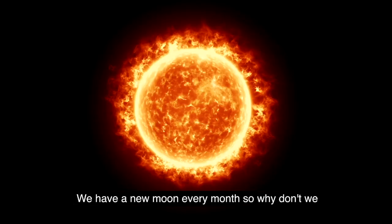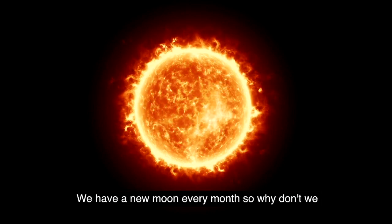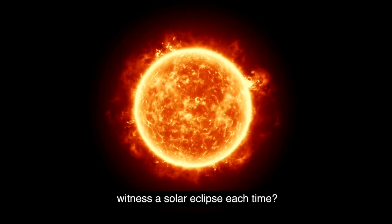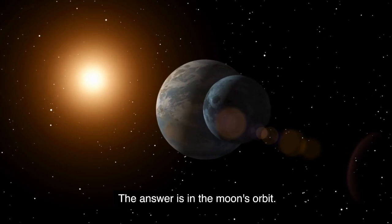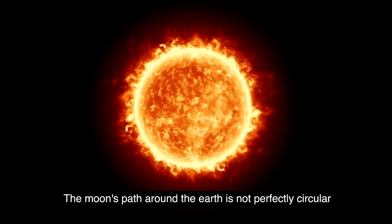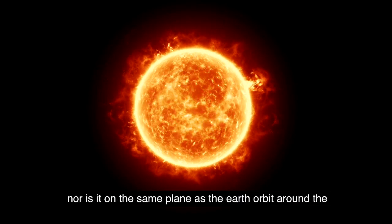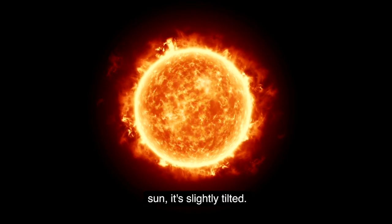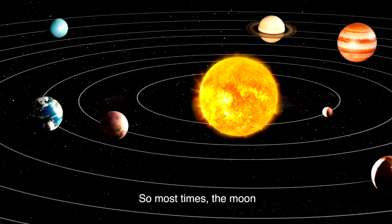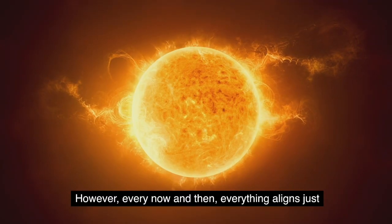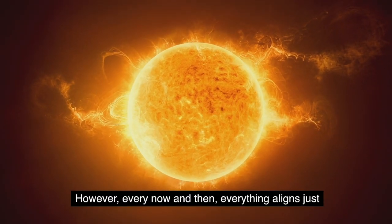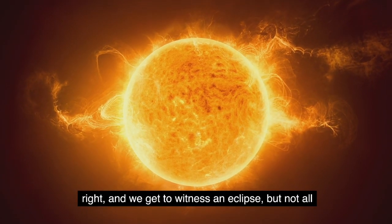But here's the intriguing part. We have a new moon every month so, why don't we witness a solar eclipse each time? The answer is in the moon's orbit. The moon's path around the Earth is not perfectly circular nor is it on the same plane as the Earth's orbit around the sun. It's slightly tilted, so most times the moon's shadow misses the Earth entirely. However, every now and then, everything aligns just right and we get to witness an eclipse.